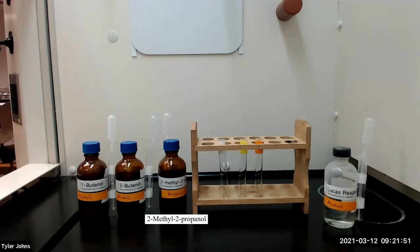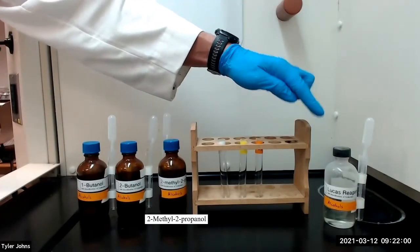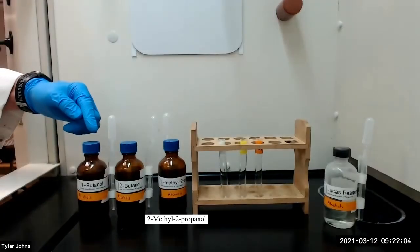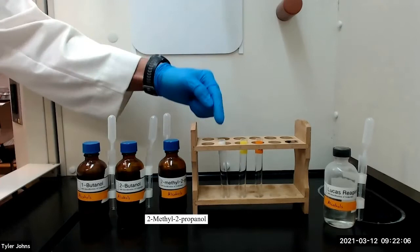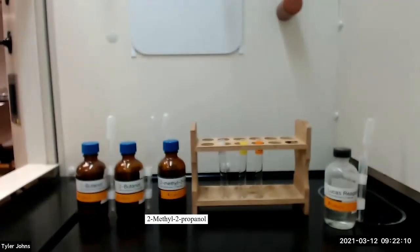The Lucas test does not work well with solid alcohols or liquid alcohols containing six or more carbons. We will begin by placing two milliliters of the Lucas reagent in three separate test tubes. We will then add three to four drops of the alcohols into the corresponding test tubes. We'll stopper the test tubes and shake vigorously.